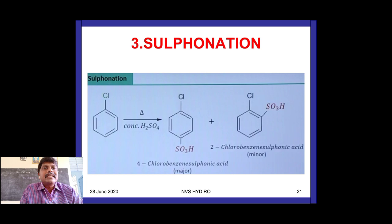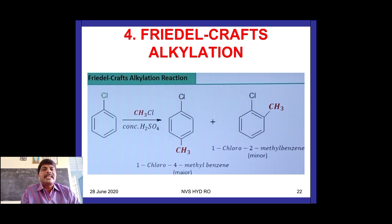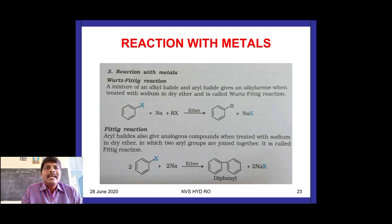Fourth electrophilic substitution reaction: Friedel-Crafts alkylation. When chlorobenzene reacts with methyl chloride in the presence of a Lewis acid, ortho and para products are formed. These are the electrophilic substitution reactions related to the benzene ring of halo arenes.